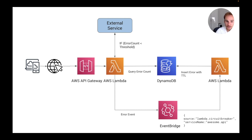Now, if the external service is not replying or it's taking 10 seconds to reply, you still pay for those 10 seconds. So with this pattern, what we want to do is track the external service we call from a Lambda function. If it's not replying, we want to stop sending requests and just return an error. To keep track of these errors, we store this information in DynamoDB.